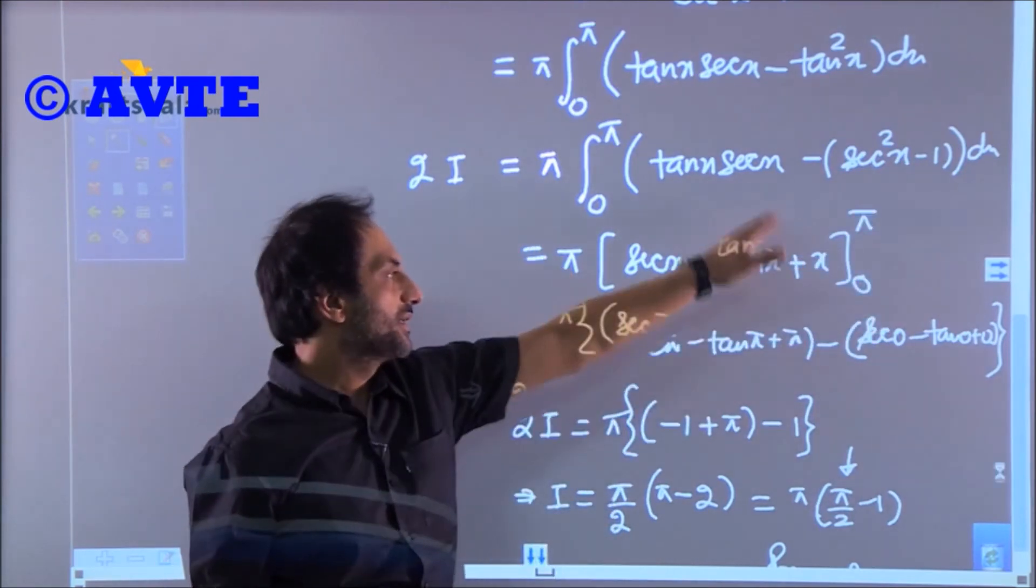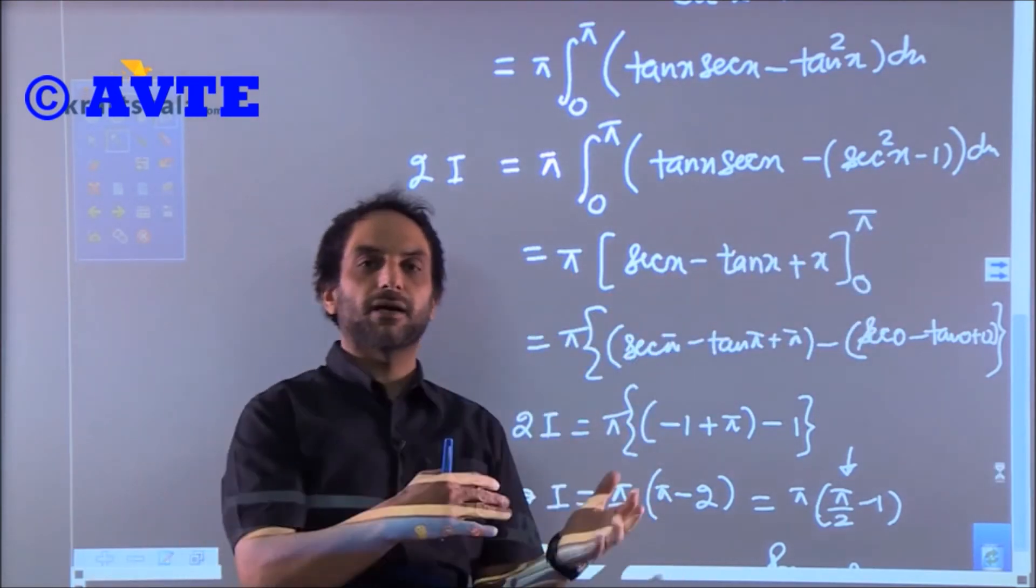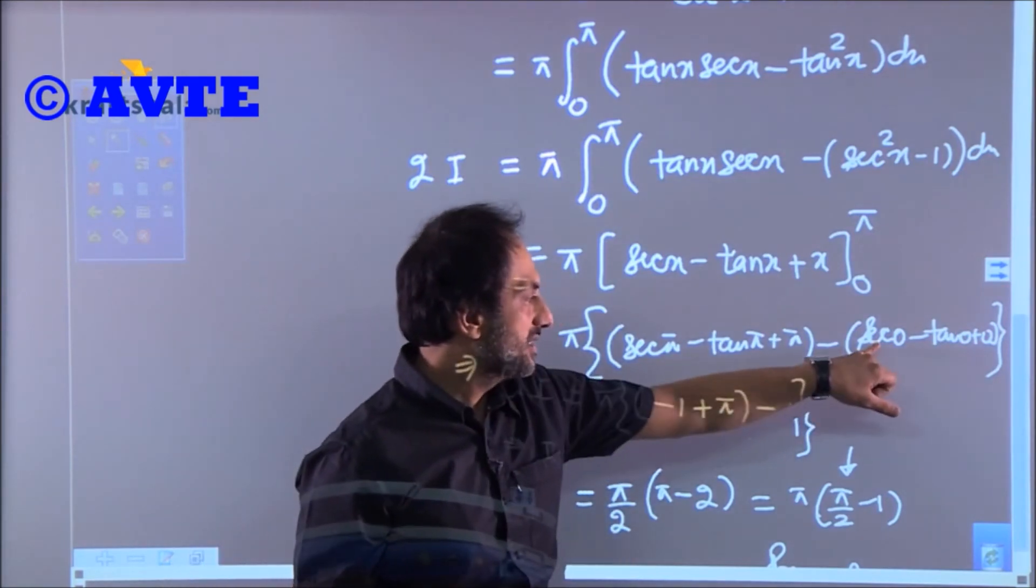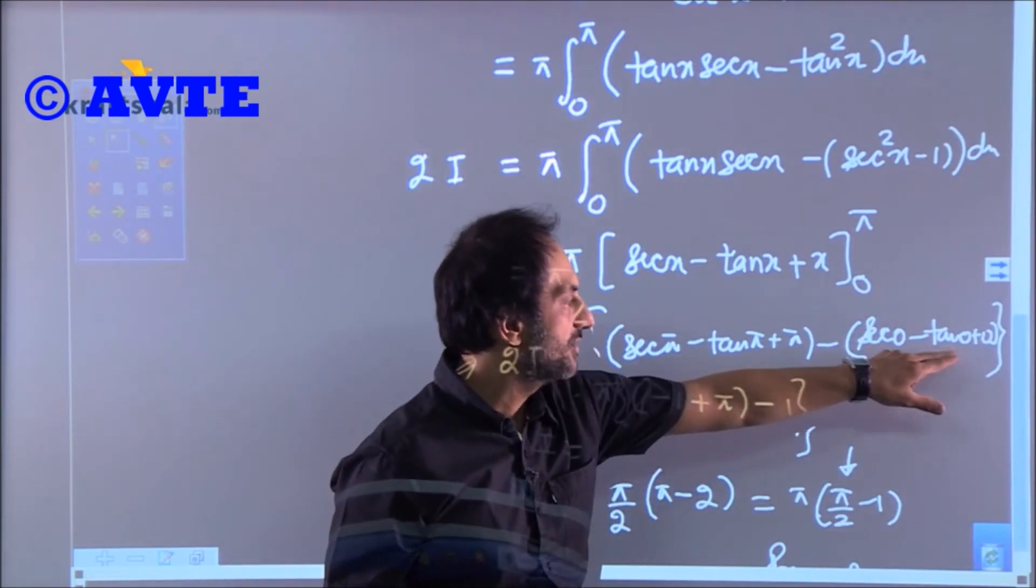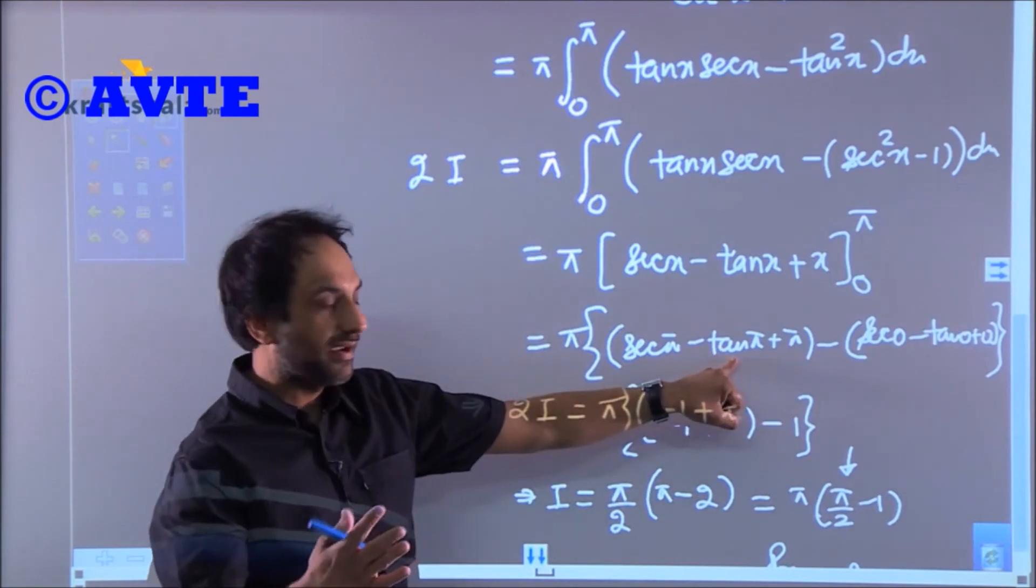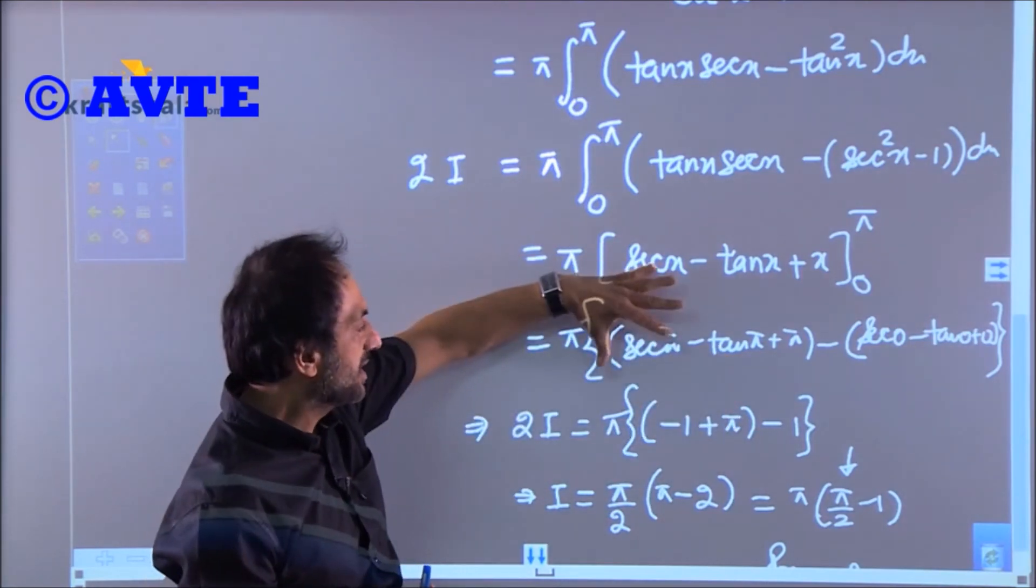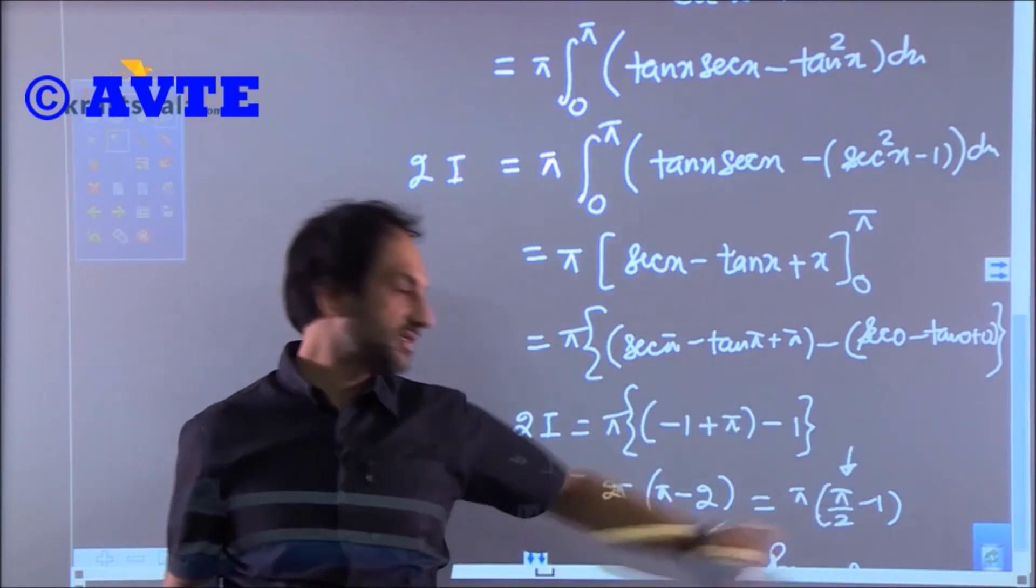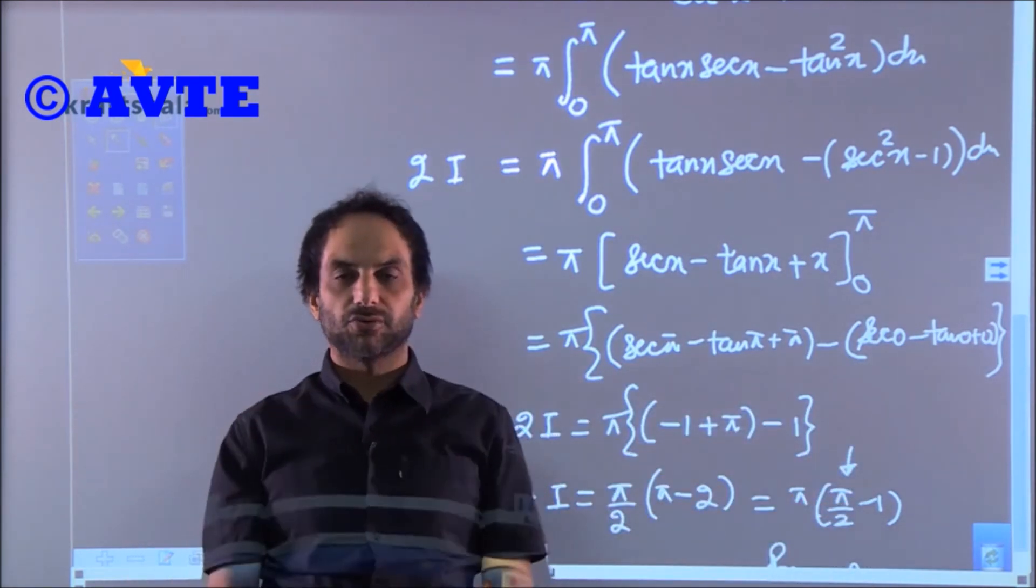Now it is only a matter of putting upper limit minus the lower limit. What is sec 0? One. What is tan 0? Zero. What is tan π? Everyone knows it is zero. Secant π is -1. So on solving, this is what we get. This is the answer, or one could also take the LCM—that's up to you.